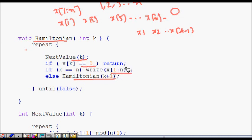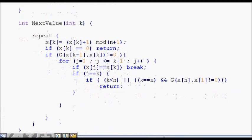The main function here is the next value. We will try out with one example. This just explains this code next value k. This tries to assign the kth node in the cycle.